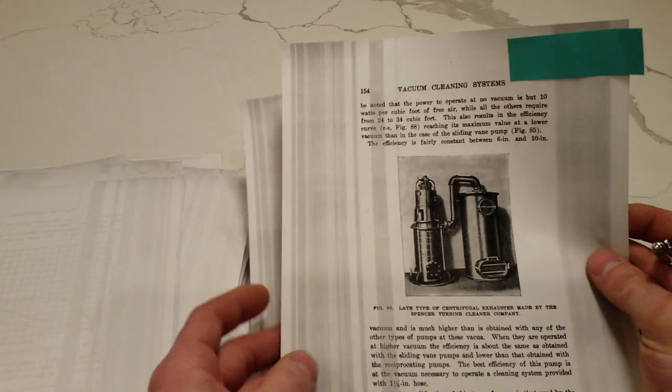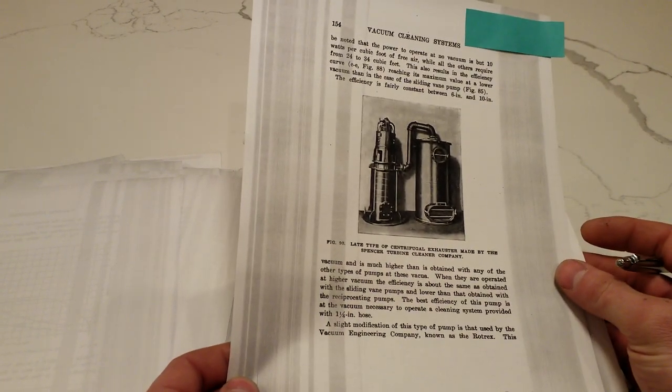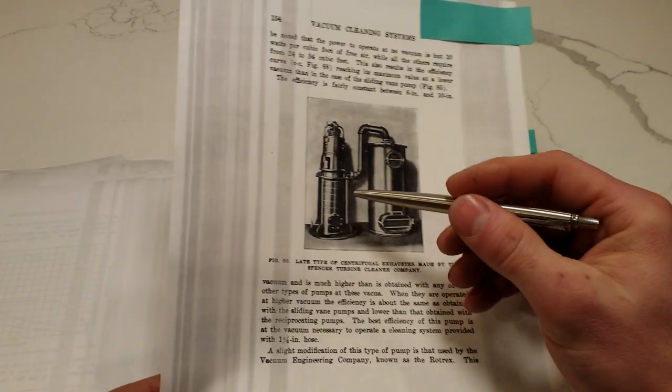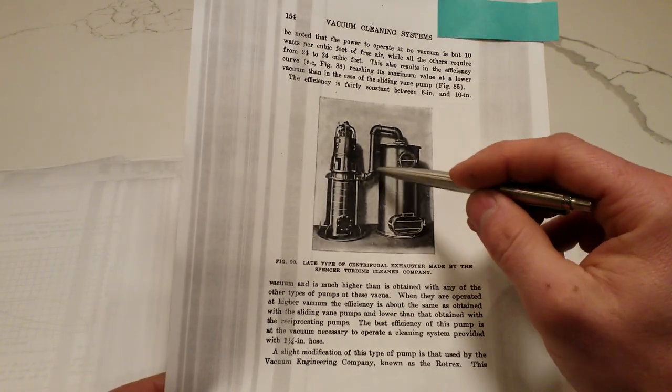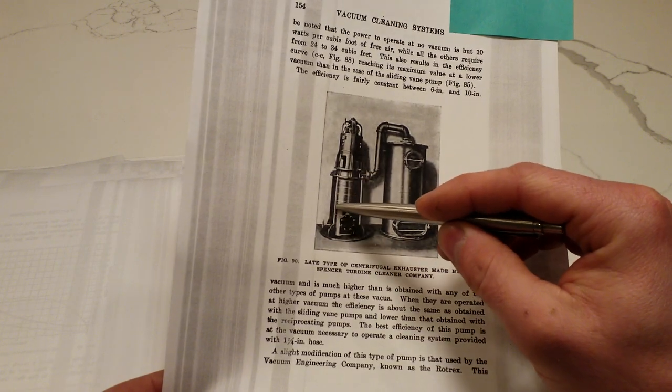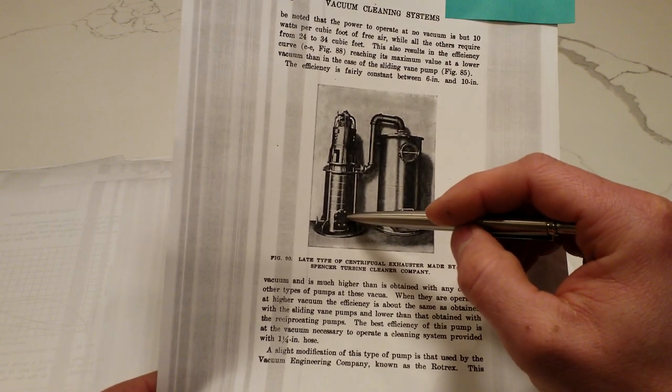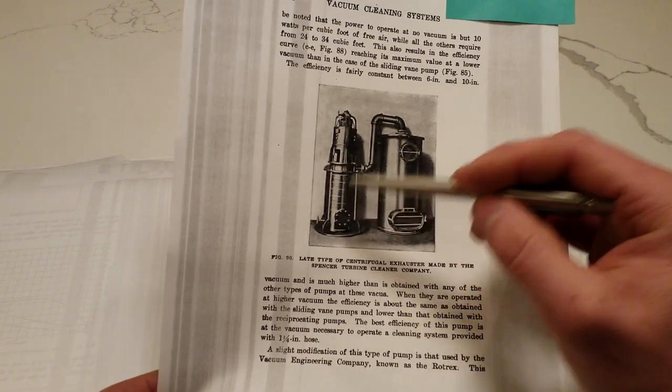Spencer. So, here's your separator. Here's your turbine. The air comes in from the top. Goes through the impellers. This looks like it's got about 10 impellers. And, your exhaust to the, to the chimney would have been on the bottom.